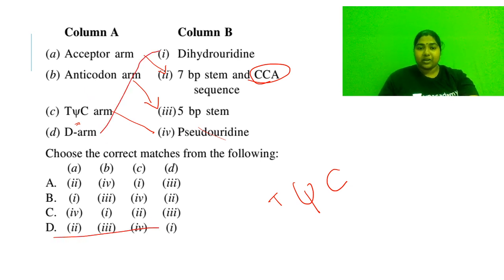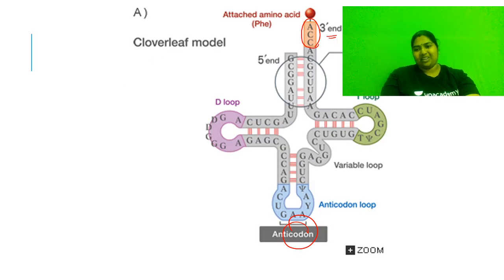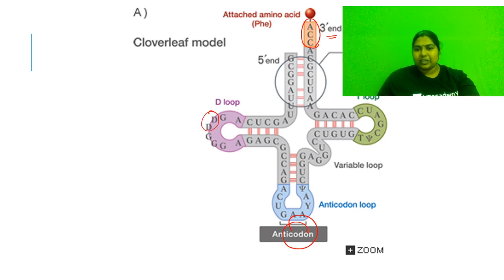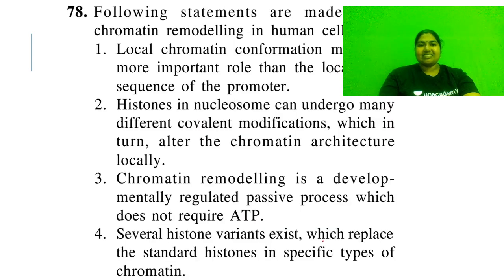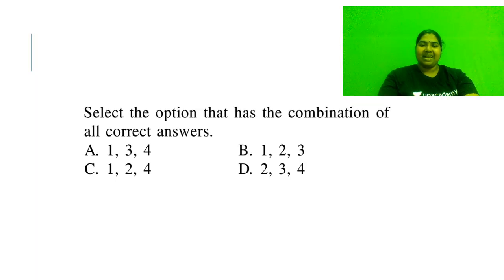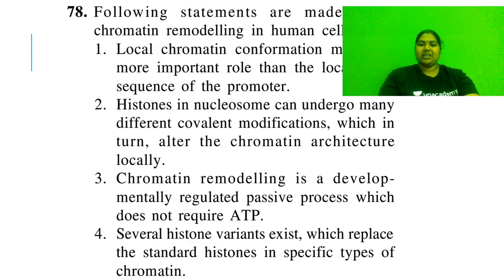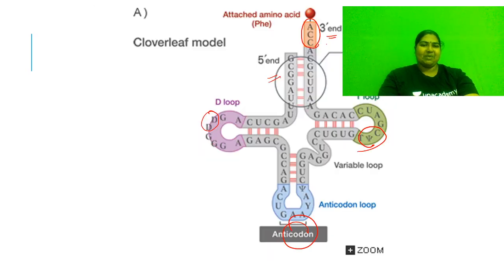The D arm contains dihydrouridine - a modified base - which is why it is called the D loop. The TΨC loop is named for thymine-pseudouridine-cytosine. The 3' end and 5' end are part of the acceptor arm. We will take up a couple more questions in the next class.